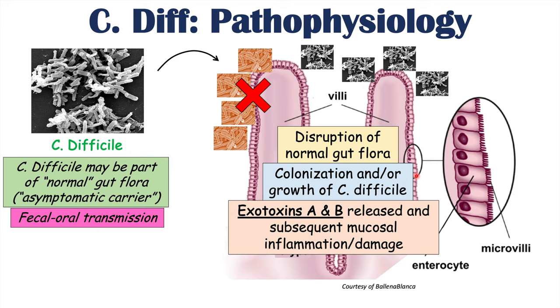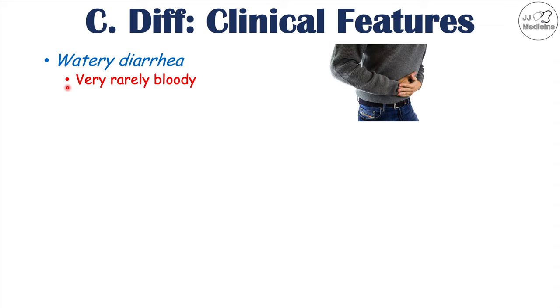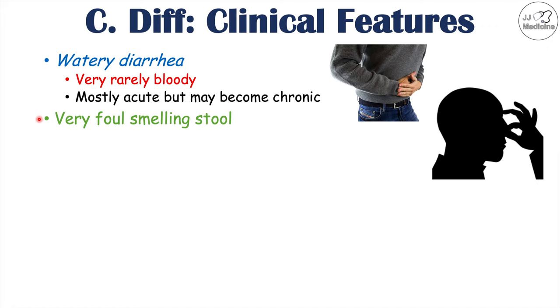The major symptom of C. diff colitis is watery diarrhea — an increase in frequency or decrease in consistency of bowel movements, often three or more episodes over a 24-hour period. We are not going to see bloody diarrhea, although occult blood — a very small microscopic amount — may be present from mucosal inflammation. This diarrhea is acute, occurring less than two weeks, though it can become chronic. A very important characteristic is that it is very foul-smelling; nursing staff are often among the first to notice this smell when a patient is admitted.